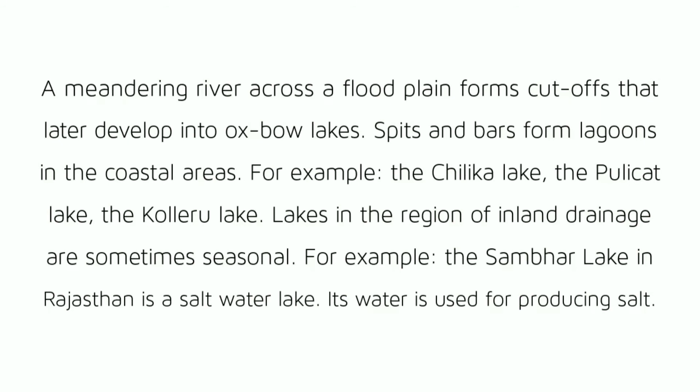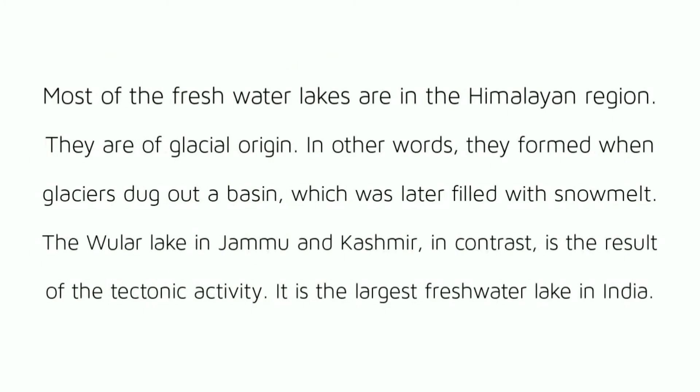Spits and bars form lagoons in the coastal areas — for example, the Chilika lake, the Pulikat lake and the Kolleru lake. Lakes in the region of inland drainage are sometimes seasonal; for example, the Sambhar lake in Rajasthan is a salt water lake, and its water is used for producing salt. Most of the freshwater lakes are in the Himalayan region and are of glacial origin — formed when glaciers dug out a basin which was later filled with snowmelt.